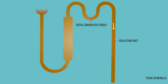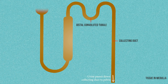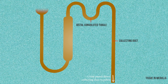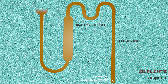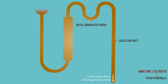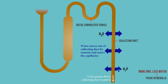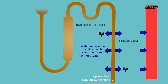As the fluid moves down the collecting duct, the tissue in the medulla surrounding the duct gets more and more concentrated. The very low water potential in this region provides a water potential gradient. Water therefore leaves the collecting duct by osmosis and moves into the tissues around it, into the blood capillaries called the vasa recta, and is transported away.